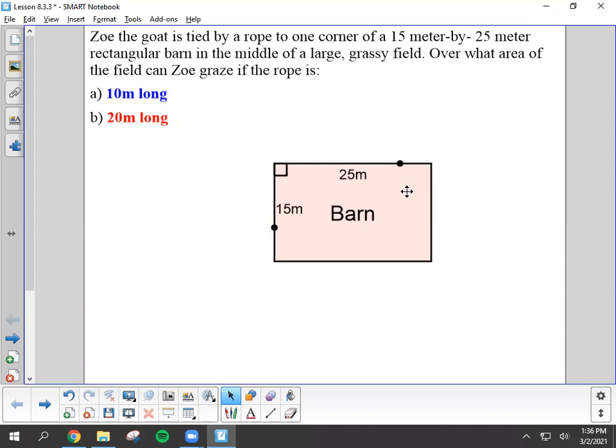So here we have our barn. One length is 25 meters and the other length is 15 meters. It is a rectangle, which means the corners of the barn are 90 degrees. Zoe is tied up to the outside of the barn, so she is going to be grazing outside the barn.